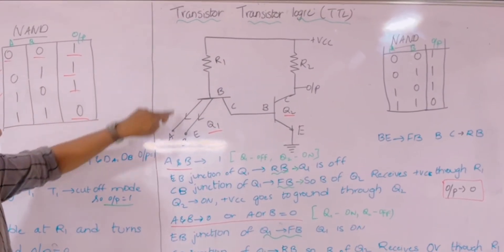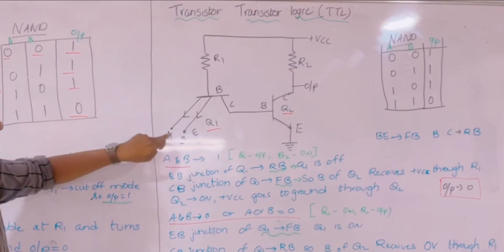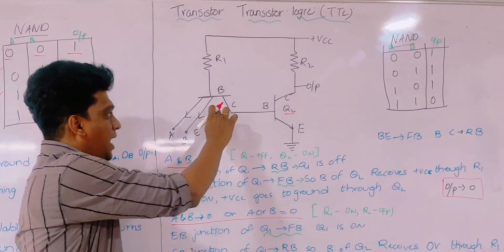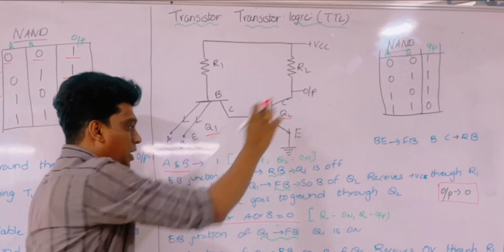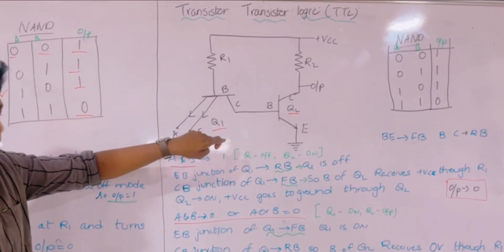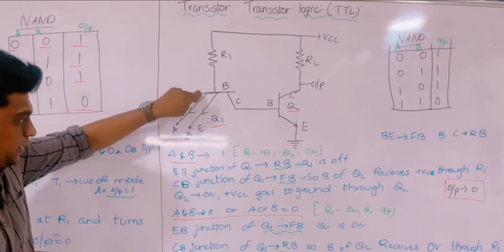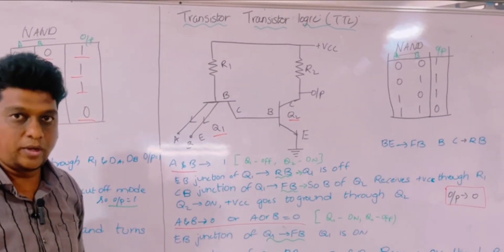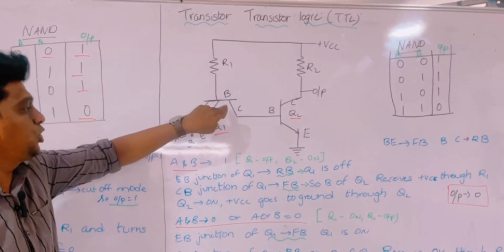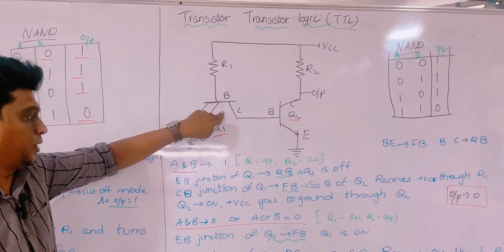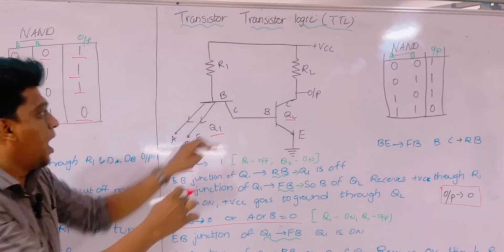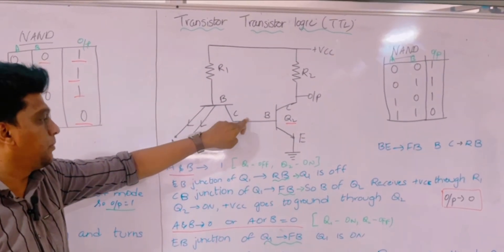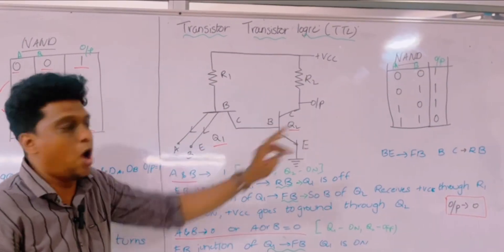First, apply A and B equal to 1,1. When both inputs are 1, Q1 is in the off condition and Q2 is in the on condition. The emitter-base junction of Q1 becomes reverse biased, which turns Q1 off.